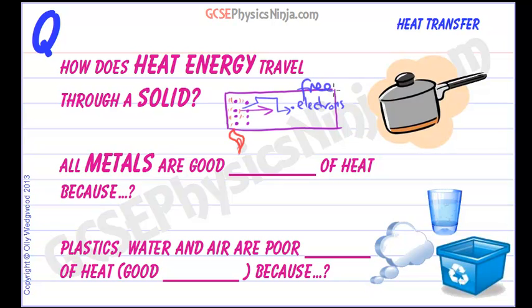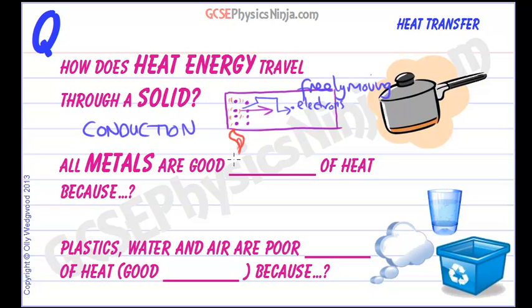So freely moving electrons help conduction an awful lot in a metal. So how does heat energy travel through a solid? It travels by conduction. All metals are good conductors of heat because they have freely moving electrons.